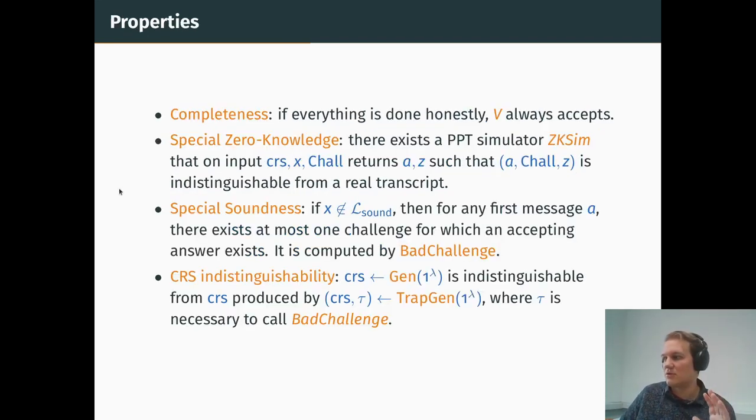We want the following properties for our trapdoor sigma protocols. First, the completeness, which is if you do stuff correctly, then the verifier accepts. The special zero-knowledge is that on input a statement x that belongs to L_ZK and a challenge, then you can generate false transcripts that are indistinguishable from a real transcript. So we have the special soundness. As I said, this is here where we get the gap between L_ZK and L_sound. Because here, if x does not belong to L_sound, then whatever first message you send, and whatever challenge is then returned, there is no accepting answer, except for one challenge.